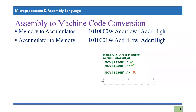Let's consider another instruction: MOV [BX], AX. This is register indirect mode — we know it involves memory and AX is the accumulator, moving data into memory. But this instruction is not valid for this case because it is not a direct memory addressing mode. So any other type of memory mode will not work with this specific solution.